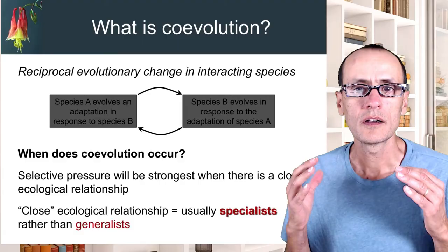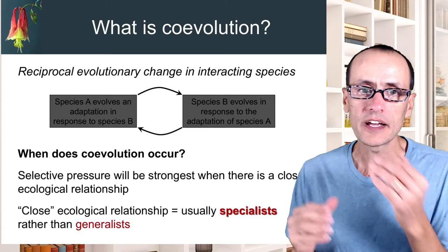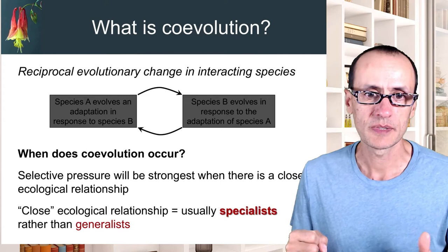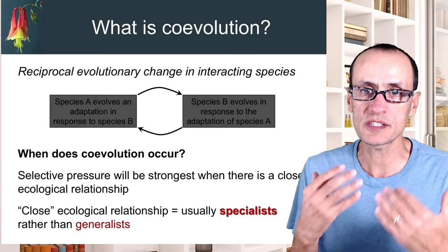What is co-evolution? In the simplest formulation, it's really the reciprocal evolutionary effects that one species has on another species. Through this interaction, evolutionary change happens. Species A evolves in response to some selective pressure by species B, and vice versa.